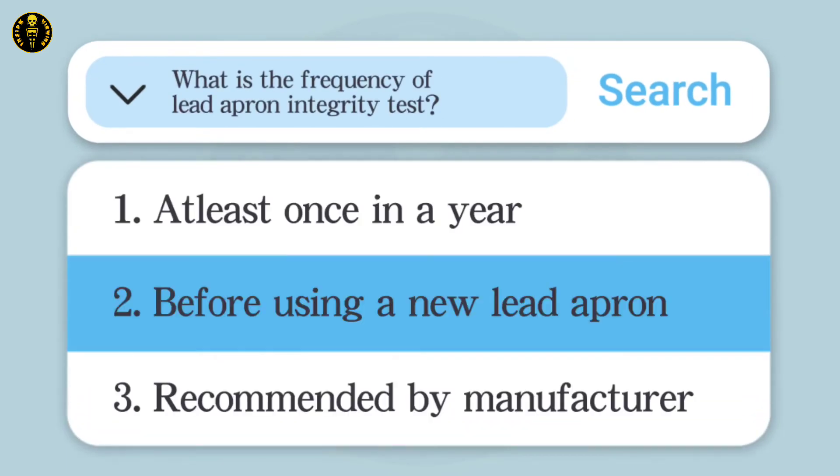To ensure adequate radiation protection, lead garments need to be checked at least once a year. It is also important to check the integrity of every newly purchased radiation protection clothing prior to use.